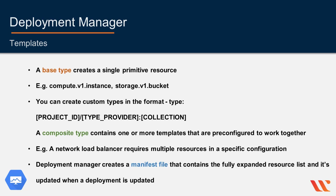A base type creates a single primitive resource. For example, Google-owned base types include compute.v1.instance, storage.v1.bucket, and sqladmin.v1beta4.database. Base types are supported by an API that supports CRUD — create, read, update, and delete. You can also create custom types, which is an advanced topic.